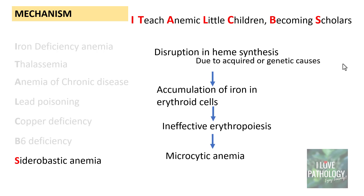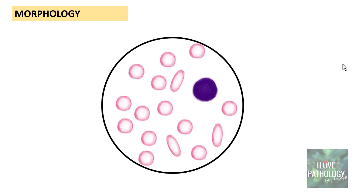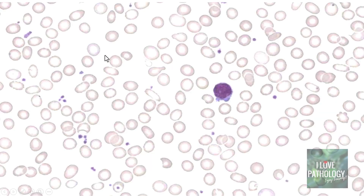Regarding morphology, most of the cells are smaller in size and the amount of hemoglobin in each cell is reduced — that is why they are microcytic and hypochromic. You can see a variable amount of anisopoikilocytosis, meaning variation in size and shape of the RBCs. On this peripheral smear illustration, most cells are smaller than the lymphocyte, and the central pallor — normally one-third of the diameter — is significantly more than normal, confirming microcytic hypochromic anemia.